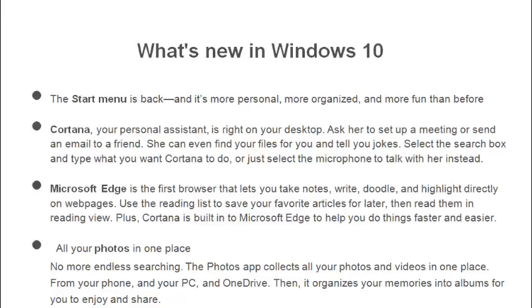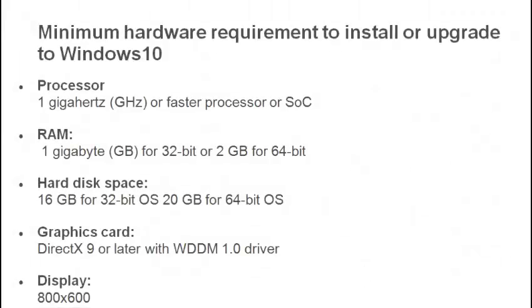These are the minimum hardware requirements to install or upgrade Windows 10. For the processor, a minimum of 1 GHz processor should be there. For RAM, a 32-bit system needs a minimum of 1 GB and a 64-bit system needs 2 GB. For hard disk space, a 32-bit OS needs 16 GB and a 64-bit OS needs 20 GB. A DirectX 9 graphics card should also be present.